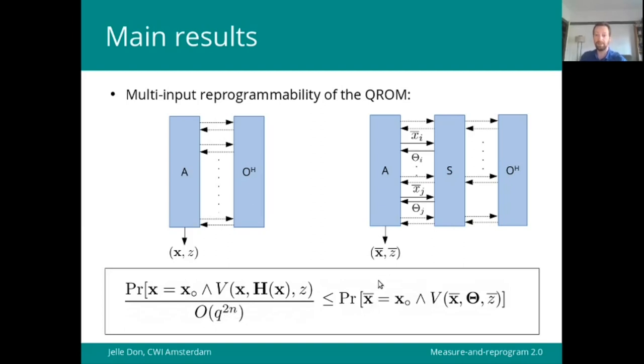but indeed they are polynomially related for constant or logarithmic n. Another observation is that instead of talking to a real random oracle itself, the simulator can also use a quantum secure pseudorandom function, if the adversary is at least computationally bounded, so that he will not notice the difference.